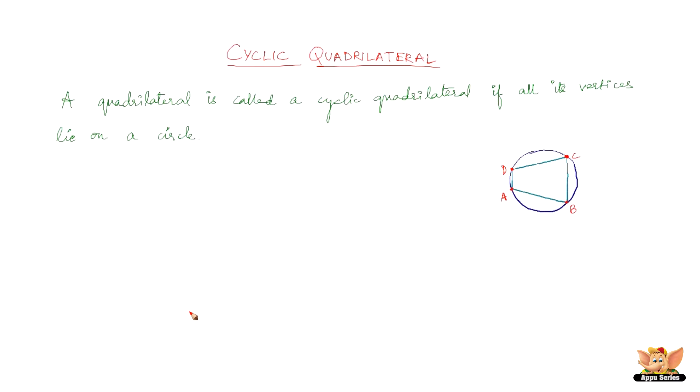But what is not a cyclic quadrilateral? Let us look into that. It should be a pretty straightforward thing because if any one of its vertices doesn't lie on the circumference of a circle, then that is not a cyclic quadrilateral.